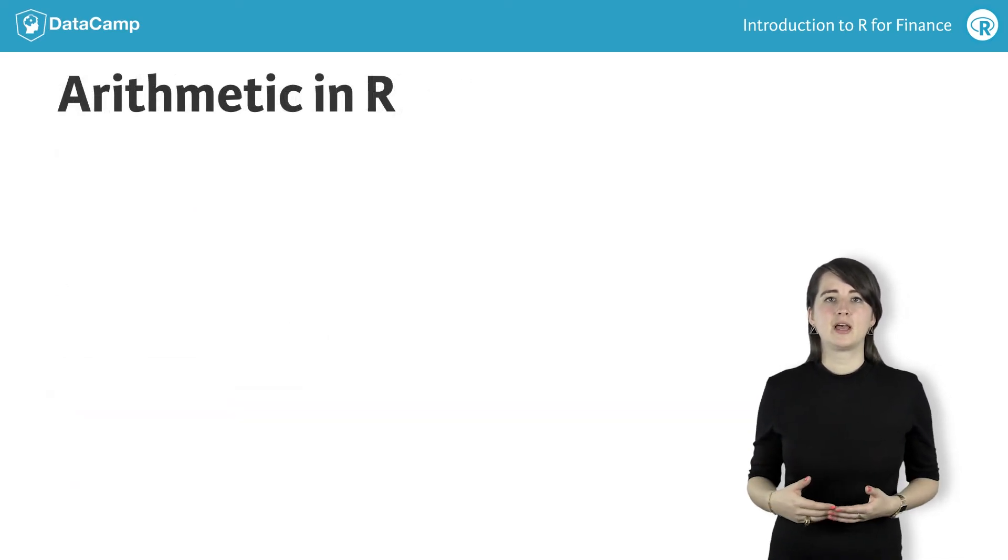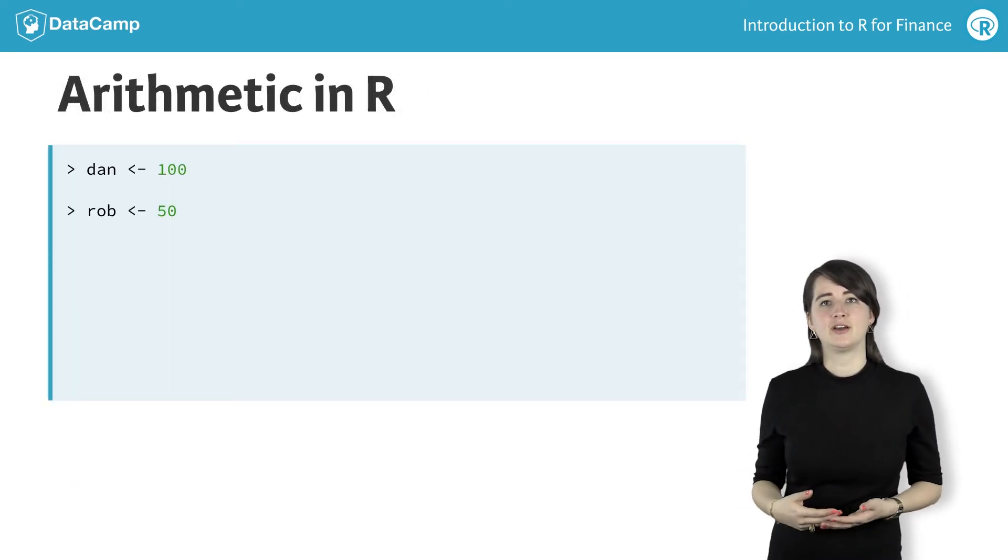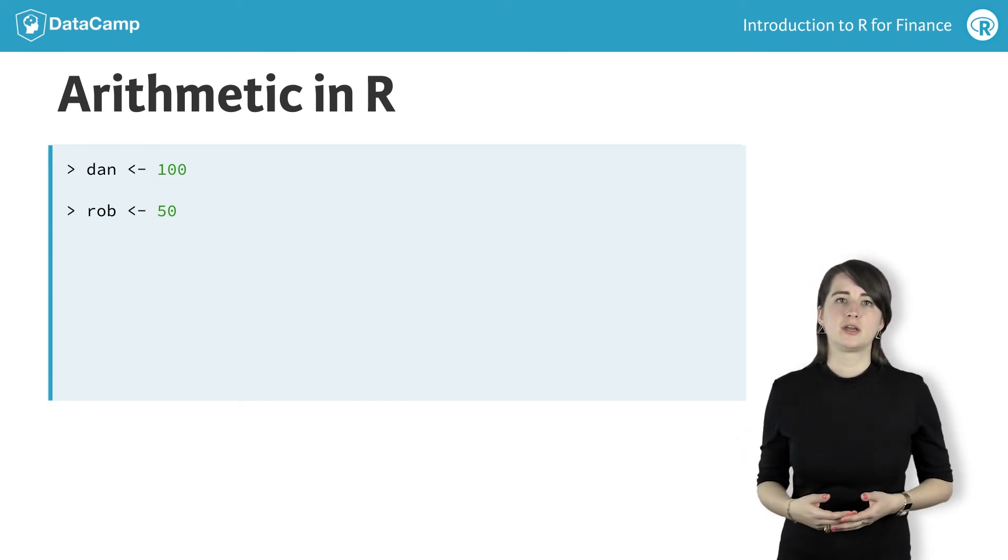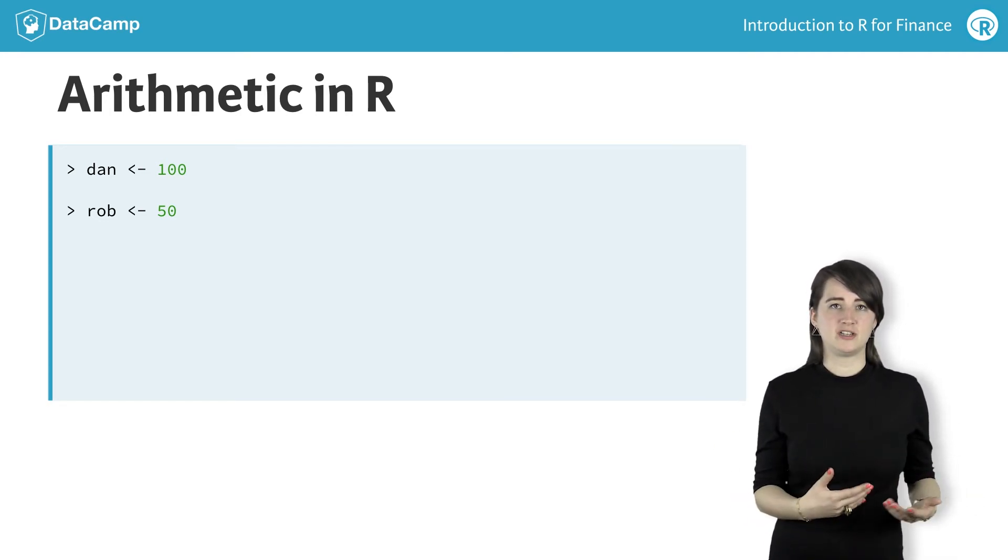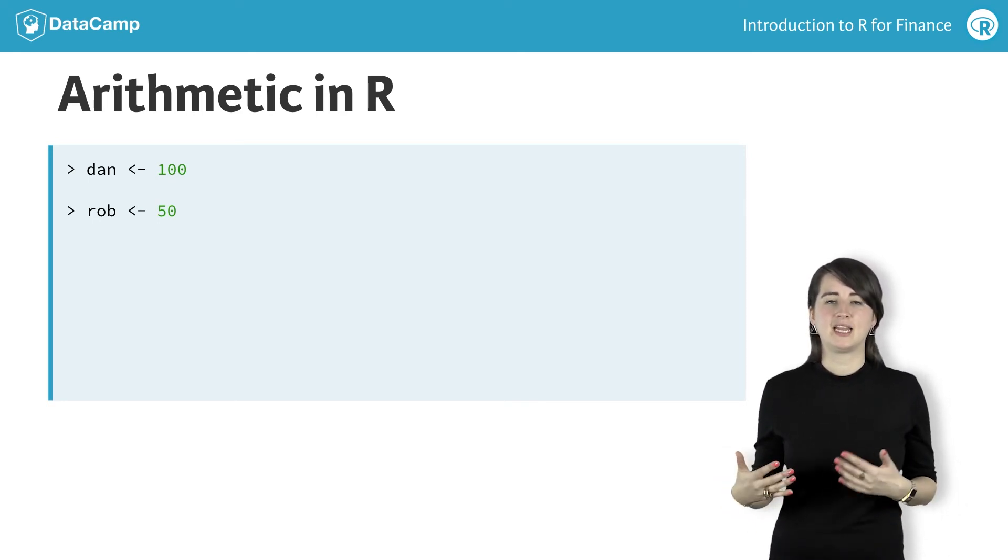As another example, assume your good friend Dan owes you $100. To keep track of this, you can create a variable named Dan and assign the value of 100 to it. If your other friend Rob owes you $50, you can repeat the process by creating a variable for Rob and assigning it 50.